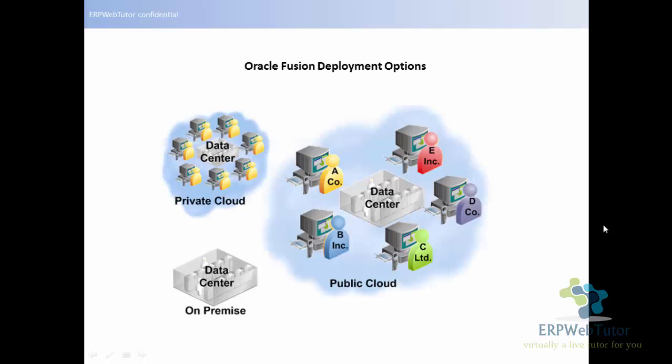This is a simple diagram showing all the different options we have while implementing Fusion. As you know, Fusion is the next hot thing in the market in terms of cloud-based ERP software solutions. You can have the Fusion software implemented using different techniques — different deployment options. The first one, on the right-hand side, is the public cloud option, where you have a data center and all the different companies. We will talk in detail about each of these deployment options in the following slides.